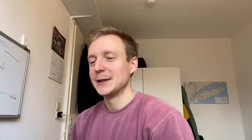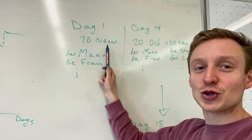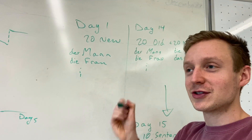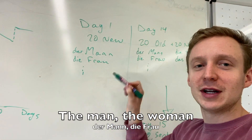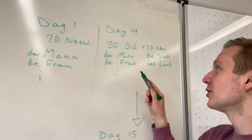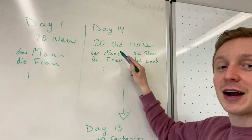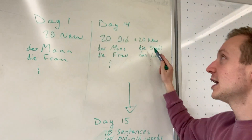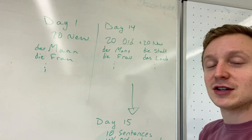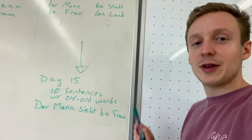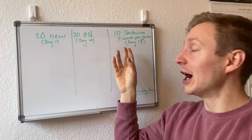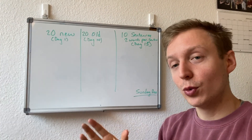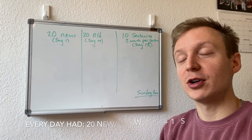So I made this system. On day one, I learned 20 new words and I wrote them down in German and in English — Der Mann, die Frau. Then 14 days later, I wrote them down again, and every day I would pick 20 new words too. So I always had 20 new words and 20 old words. Then 15 days later, I took the words from day one and wrote 10 sentences — two words per sentence using those words.